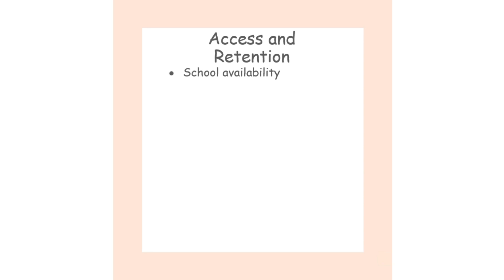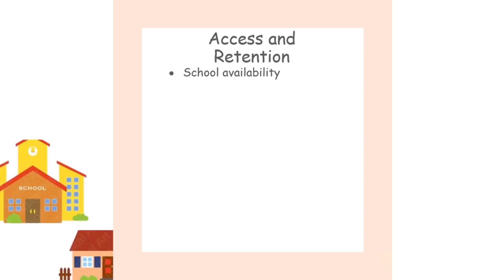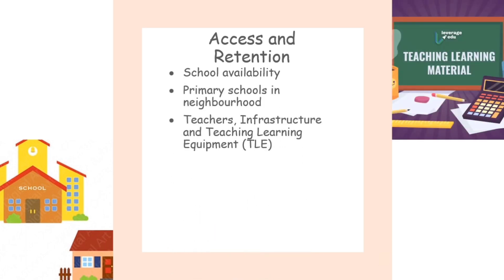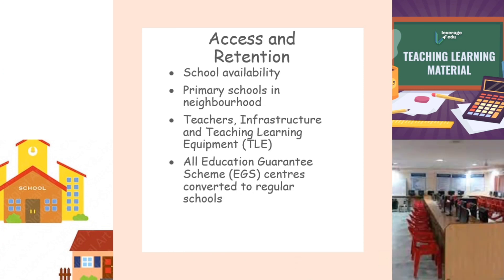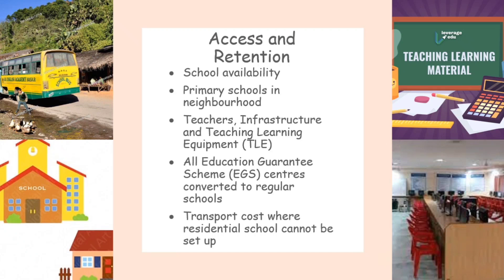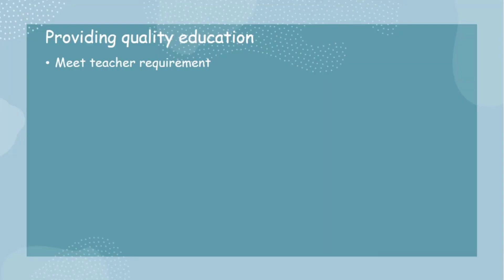Interventions under access and retention are as follows: ensure school availability within a specified area to all children; opening primary schools in neighborhood areas; providing teachers, infrastructure, and teaching-learning equipment in all schools; all Education Guarantee Scheme centers to be converted into regular schools; and allowance of transport cost where a residential school cannot be set up, for example in sparsely populated areas.